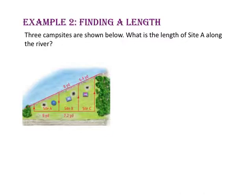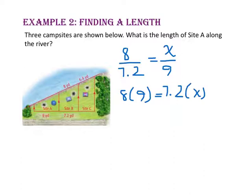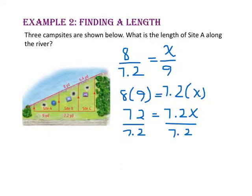In example 2, we will find a length. Three campsites are shown below. What is the length of site A along the river? Let's use the side splitter theorem to write a proportion. We know the length of site B along the river and along the road, so let's use the ratio 8 to 7.2. Our second ratio will be the length of site A along the river, which we do not know, so x, to the length of site A along the road, 9. Using the cross product property, we multiply the extremes and the means. So 72 equals 7.2x. Divide both sides by 7.2 and x equals 10.